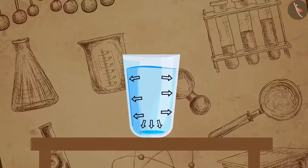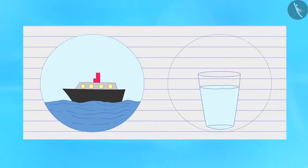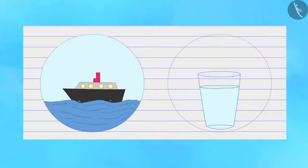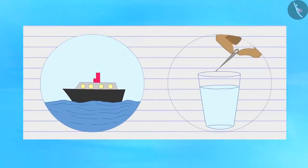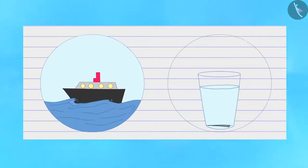Now let's understand how pressure acts on fluids. Like solids, fluids also have weight. They exert pressure on the base and on the side walls of the container in which they are enclosed. This relates to our next topic: buoyancy. Why does a huge ship made from iron and steel float on water while a small needle sinks? Let's perform an activity to understand the role of buoyancy.